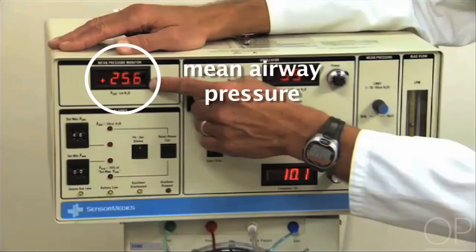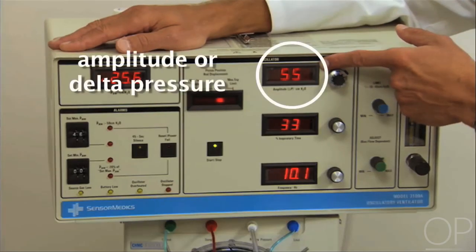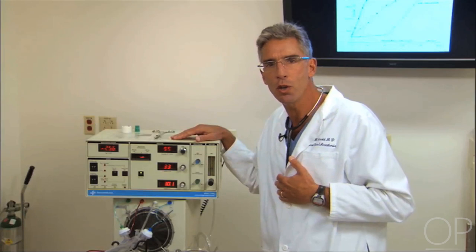This is the mean airway pressure and you're familiar with that number from conventional ventilation and this is the amplitude. This is the delta pressure measured proximally in the ventilator circuit. These are really the only two numbers you need to concern yourself with.